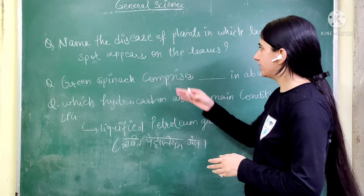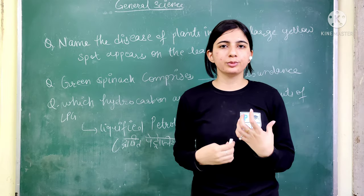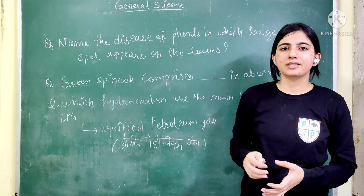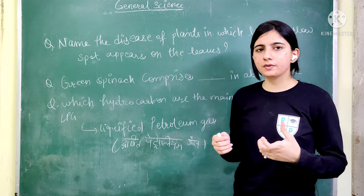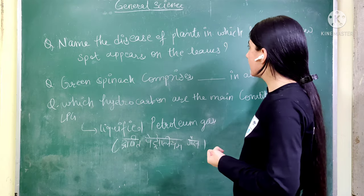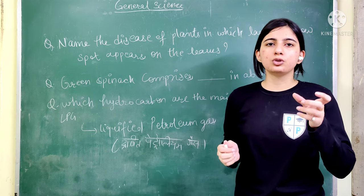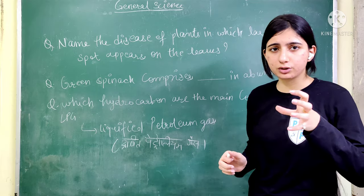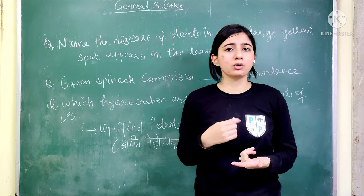Next question: name the disease of plants in which large yellow spots or marks appear on the leaves. Just as humans have diseases that show external symptoms, plants also have diseases whose symptoms are visible on their leaves. The answer is bacterial blight — it is the disease in which leaves develop yellow color marks.